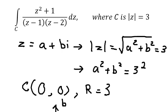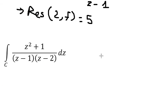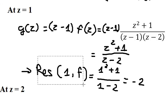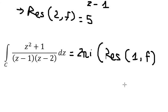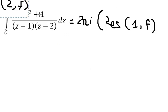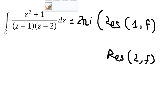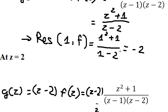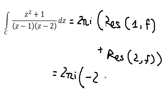Now we can find the final answer. By the Cauchy Residue Theorem, the integral equals 2πi times the sum of the residues. We sum the residues: negative 2 and positive 5. So the final answer is 6πi.